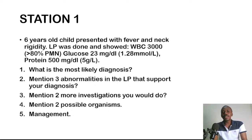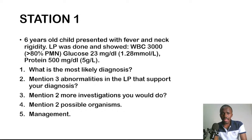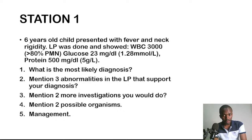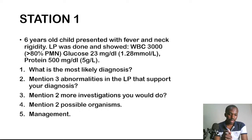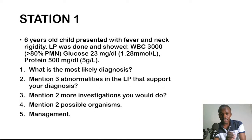Station one: A six-year-old child presents with fever and neck rigidity. Lumbar puncture showed WBC of 3000, with more than 80% polymorphonuclear cells; glucose was 23 mg/dL (approximately 1.23 mmol/L); protein was 500 mg/dL. Note that glucose can be given in mg/dL or mmol/L — the conversion factor is 18, so you divide mg/dL by 18 to get mmol/L.